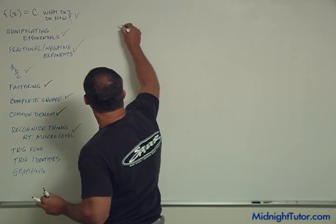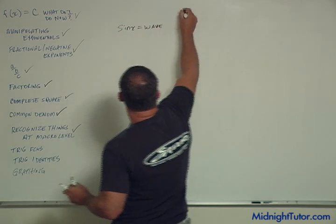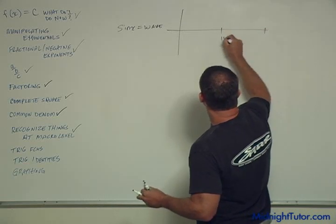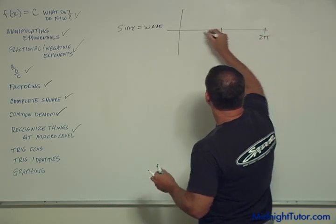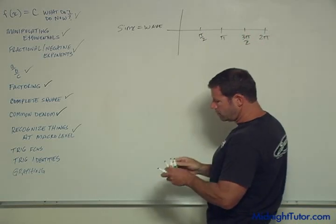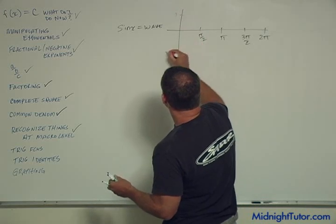So sine x is a wave, right? And it happens to have a particular format. This is pi, 2 pi, pi over 2, 3 pi over 2. And it looks like this. And it goes to 1 and minus 1.